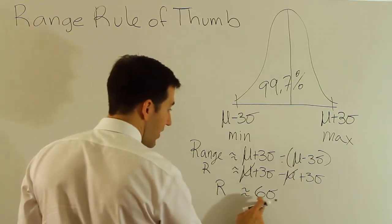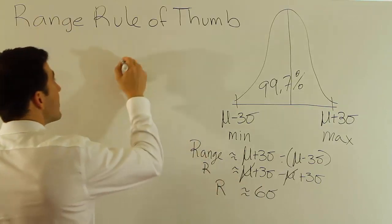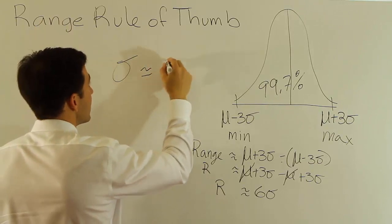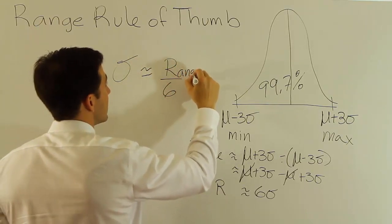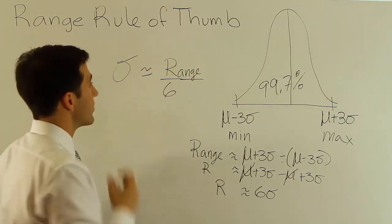Now what would happen if I divided both sides by six? Well, the six here would go away and we'd have this rule of thumb that sigma, the population standard deviation, is approximately the range over six. And that would be it. And that's kind of where we derived this rule from.